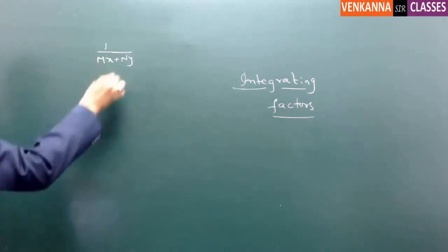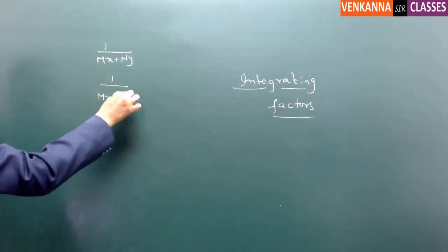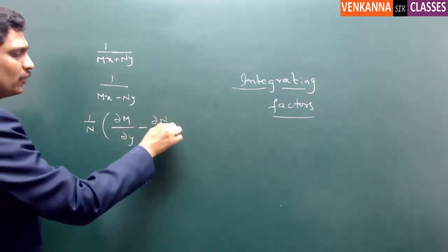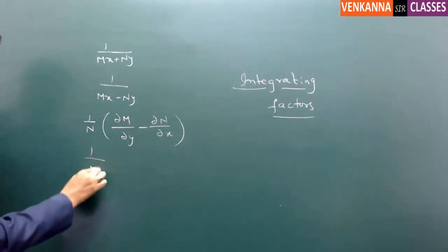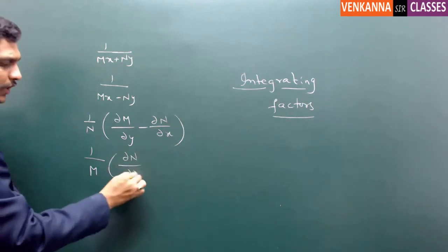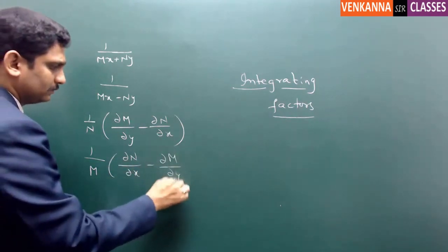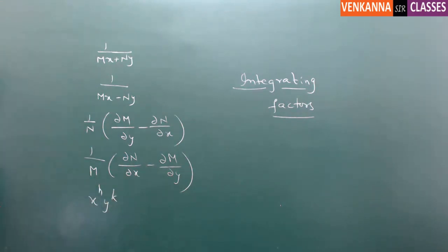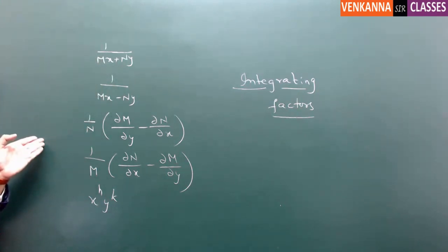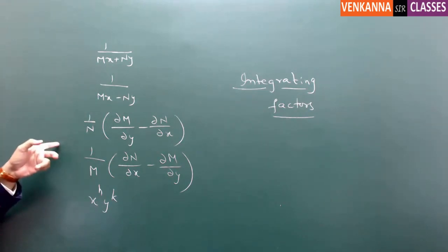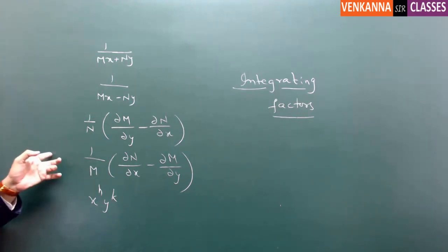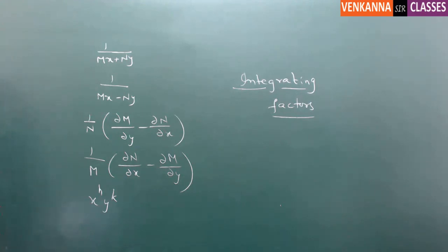The five formulae are: 1/(mx + ny), 1/(mx − ny), 1/N·(∂M/∂y − ∂N/∂x), 1/M·(∂N/∂x − ∂M/∂y), and finally x^h·y^k. I am going to take the problems one after the other. Whatever formula we use, the procedure is the same. Let us go with the first problem.